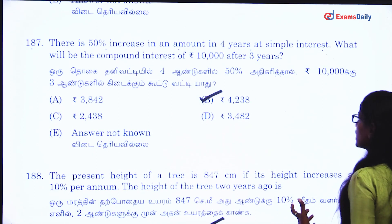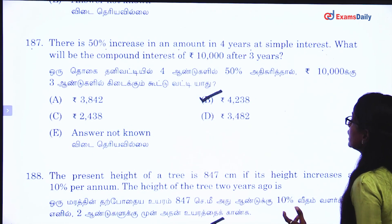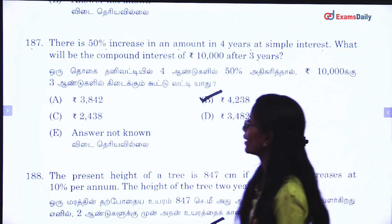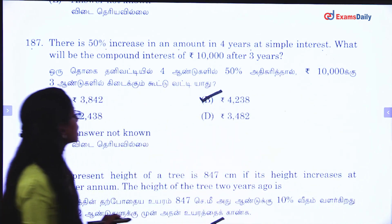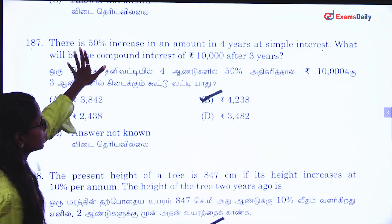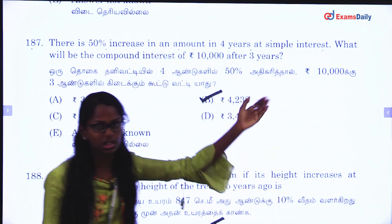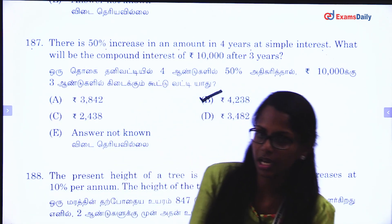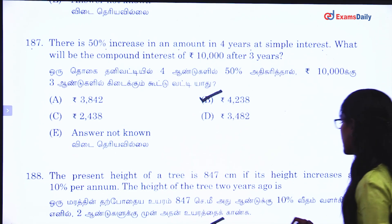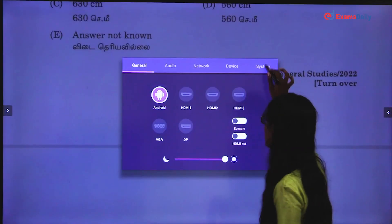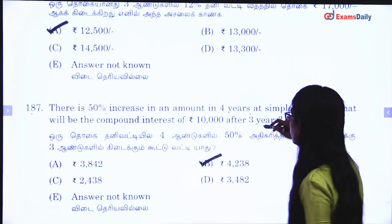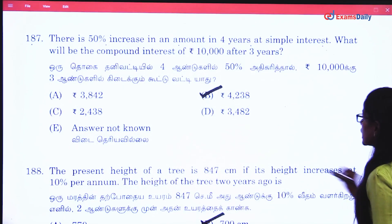Next question. There is a 50% increase in an amount in 4 years at simple interest. When will the compound interest of 10,000 after 3 years be? Find the rate of interest — that's a 50% increase. The answer for compound interest is 4,238.